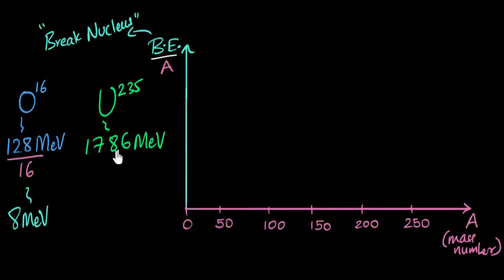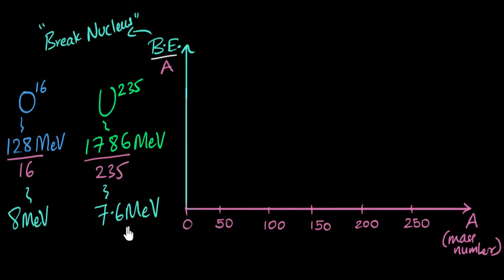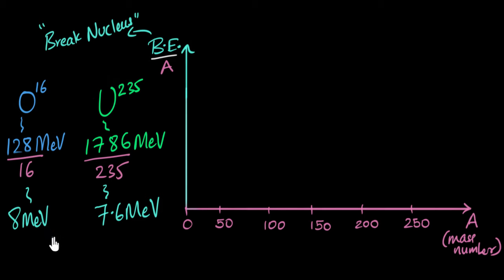For uranium-235, its total binding energy is 1786 mega electron volts, so dividing by 235 gives 7.6 mega electron volts. That means to separate one proton or neutron from uranium takes less energy compared to oxygen — so oxygen is actually more stable than uranium. If you want to talk about stability, you take the binding energy and divide by the mass number to get the binding energy per nucleon.